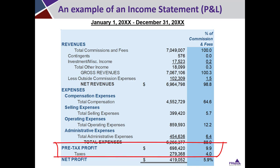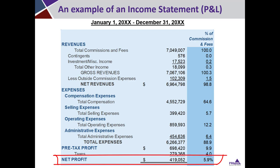When we add those up and take out taxes, we get to net profit. As a percent of revenue, that net profit is 5.9%, and we call that the net profit margin. When you hear the term 'margin,' that means profit expressed as a percent of revenue — referring to the percentage, not the dollar figure.